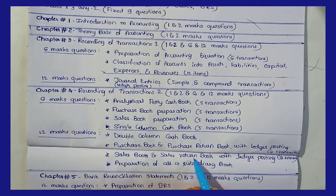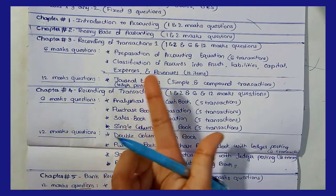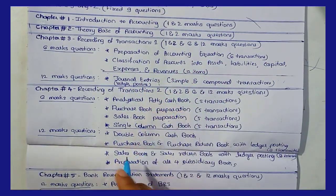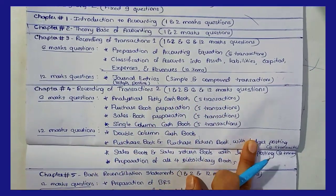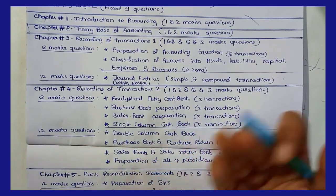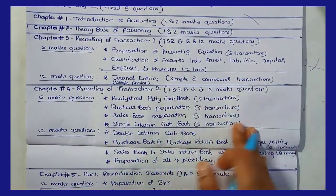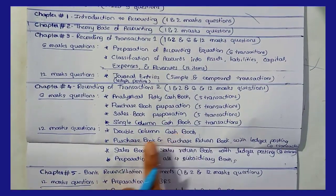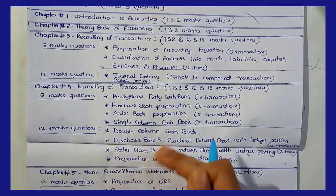The sales book and sales return book with ledger posting, and the preparation of all 4 subsidiary books: purchase, purchase return, sales, and sales return — the 4 books prepared. For subsidiary books, 6-6 transactions each, but here are 12 transactions total. Double column cash book is one topic. Purchase, purchase return, sales, sales return — book preparation.